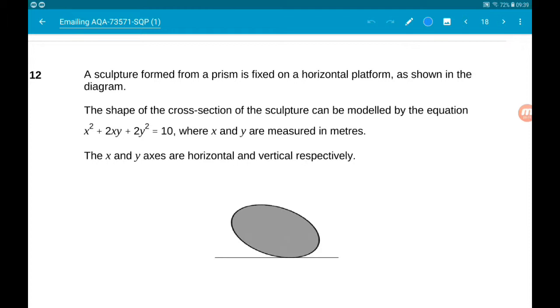So a sculpture formed from a prism is fixed on a horizontal platform as shown in the diagram. The shape of the cross-section of the sculpture can be modeled by the equation x² + 2xy + 2y² = 10,